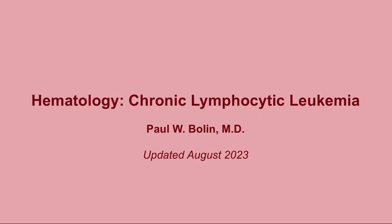We're going to talk about one of the chronic leukemias: Chronic Lymphocytic Leukemia (CLL). This does not happen in children — this is a grown-up leukemia. There are some major differences between chronic leukemias and acute leukemias, and they're going to be very apparent on presentation.